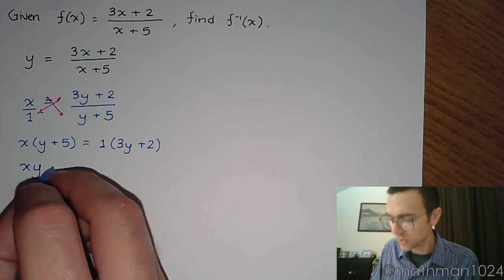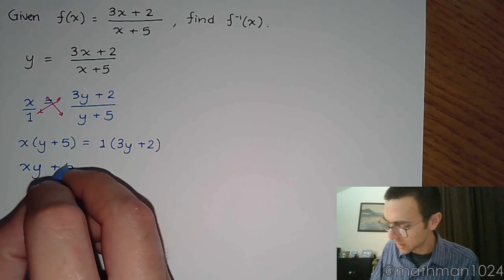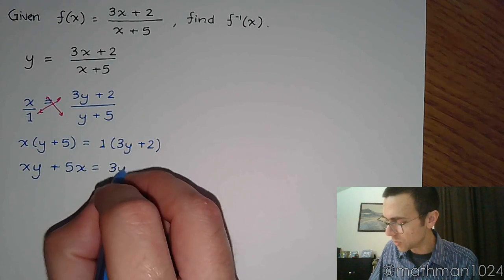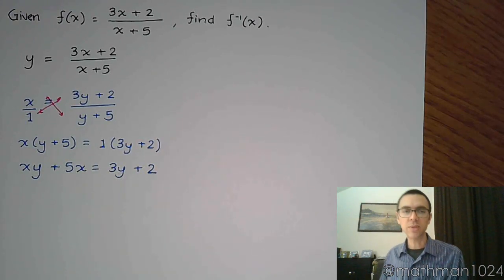But first let's multiply this out. So we have x times y, so just xy, plus 5x, and the right side multiplying times 1 doesn't do anything for us. So we get this.